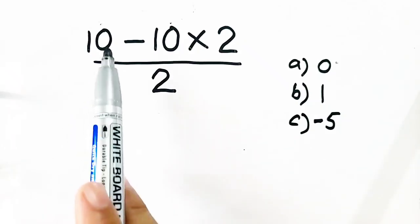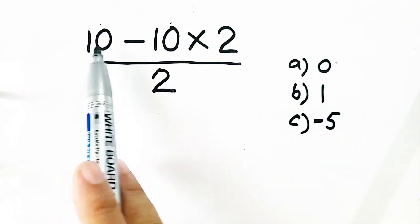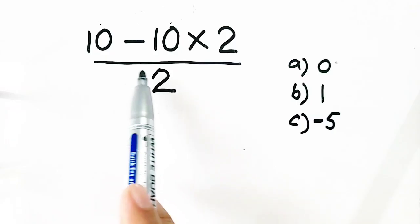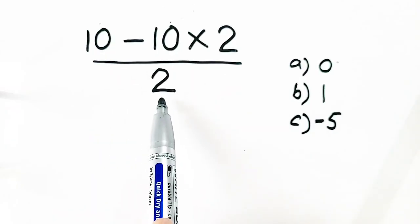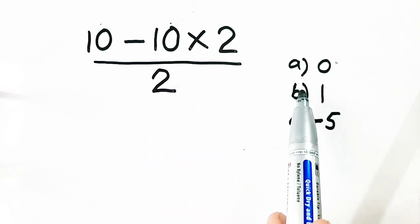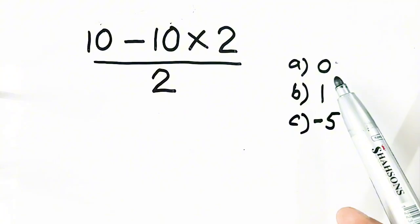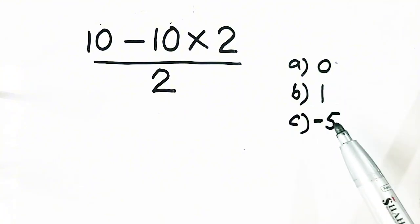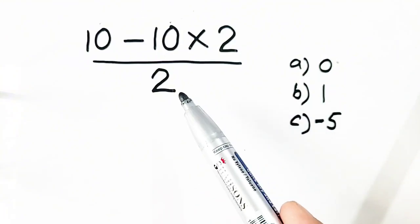Respectable audience, a new question for you: 10 minus 10 times 2 divided by 2. I have given three options. Option A is 0, option B is 1, option C is minus 5. Which one is correct?